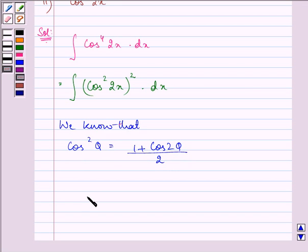Now on using this identity we have 1 plus cos 2 theta, so it will be 4x by 2, the whole raised to the power 2 into dx.